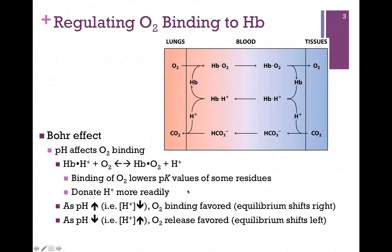In other words, the binding of oxygen to hemoglobin lowers the pK values for some residues. Remember, the lower the pK value, the more likely it is to donate a proton. So those protons were donated. This is the equilibrium that we want to look at and see how it affects oxygen binding in the lungs and tissues.